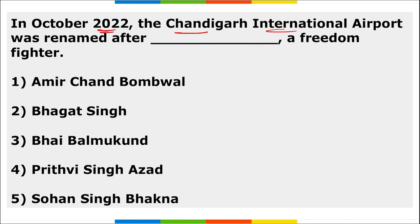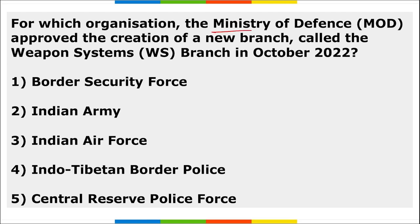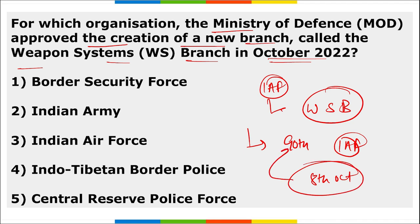In October 2022, the Chandigarh International Airport was renamed after freedom fighter Bhagat Singh, with approval from both Haryana and Punjab governments. For Indian Air Force, the Ministry of Defence approved the creation of a new branch called the Weapon System Branch. This was done on the occasion of the 90th anniversary of the Indian Air Force, observed on 8th October.